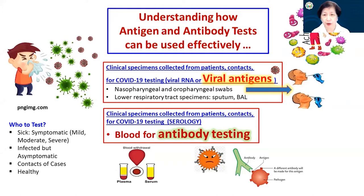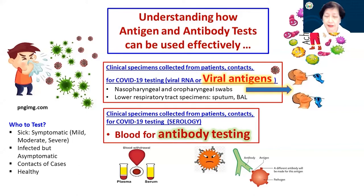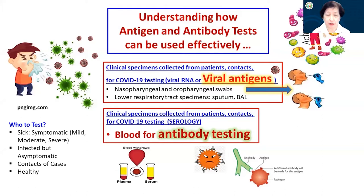For the really sick symptomatic patients, we have to collect specimens from patients — for those who are close contacts — for either viral RNA or viral antigens. The viral RNA tests have been discussed by Dr. Saloma, so in my lecture I will be discussing more about the tests for viral antigens. Note that the specimen is also nasopharyngeal or oropharyngeal swabs, or lower respiratory tract specimens.